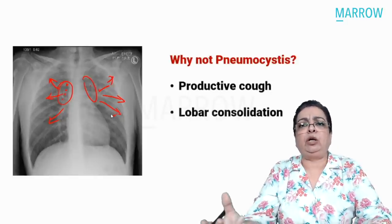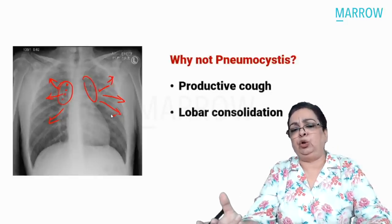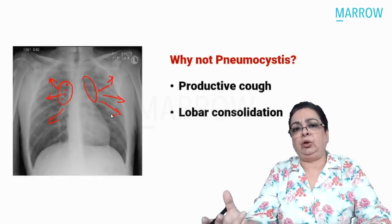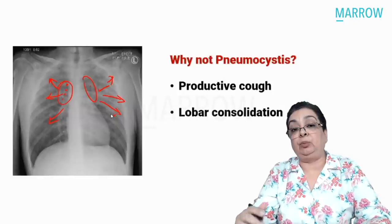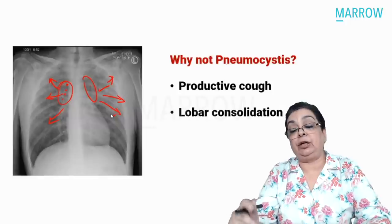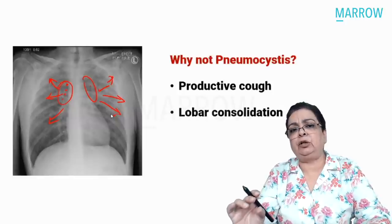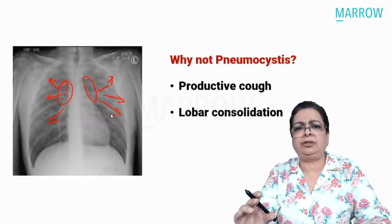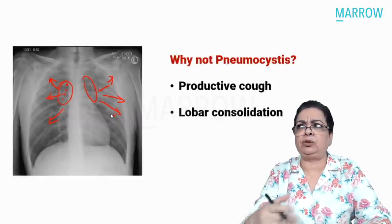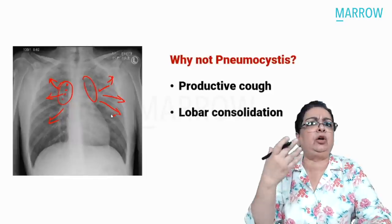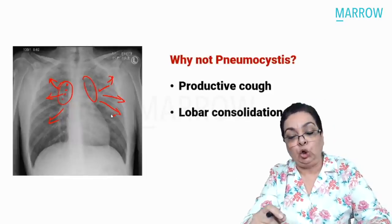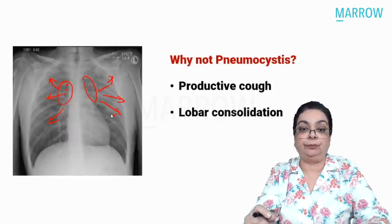Mycoplasma pneumoniae is also generally associated with very little sputum production. The examiners can trick you into arriving at the wrong answer, but reading carefully — productive cough plus lobar consolidation — confirms Streptococcus pneumoniae as the answer.